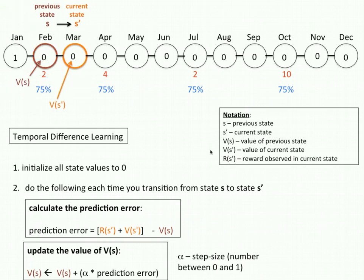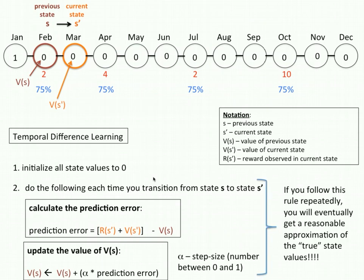Now I transition from, remember my previous current state was February, and I transitioned to March, and that means my new previous state is February, my new current state is March. Now I follow these two steps again. What I claim is that if you do this every single transition, you follow these two steps, and you do this again and again, the numbers that appear here will approximate the true state values. Remember the true state values that I gave you earlier in green? You will get to eventually the true state values for this problem, and that's pretty remarkable.